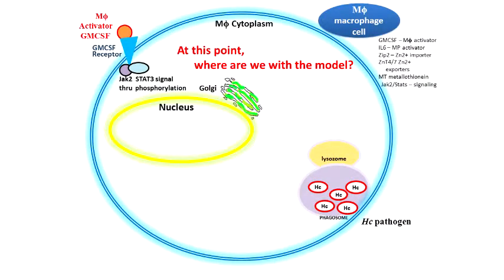We know that we need that macrophage activator — the cytokine — which will come to a receptor on the cell wall. This cytokine activates these, which activate phosphorylation. Phosphorylation is, some people would argue, the most important post-translational modification — that means after the protein is formed, you can modify it with a phosphate group. If we modify this with a phosphate group, it becomes a signaling molecule. We're going to try to see what it signals in the next few slides.